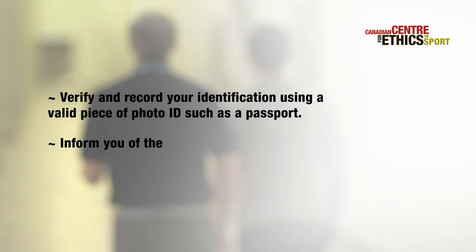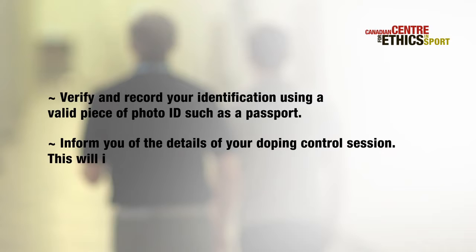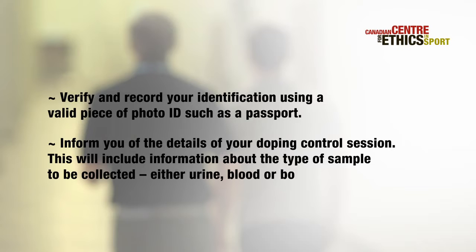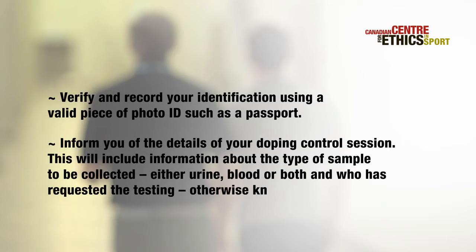The chaperone will verify and record your identification using a valid piece of photo ID, such as a passport. They will inform you of the details of your doping control session, including information about the type of sample to be collected — either urine, blood, or both — and who has requested the testing, otherwise known as the test authority.